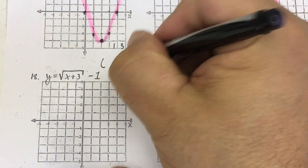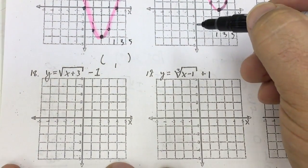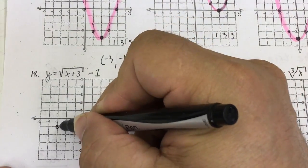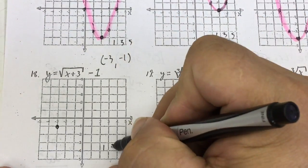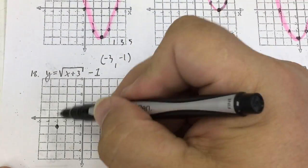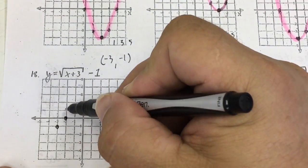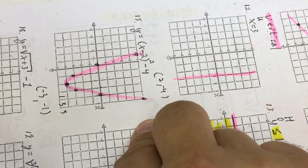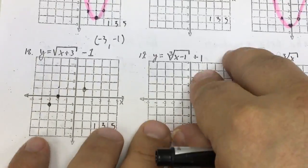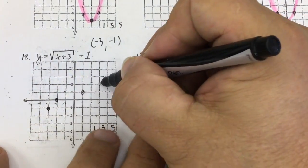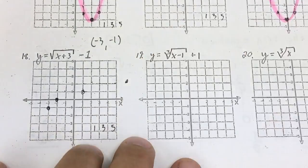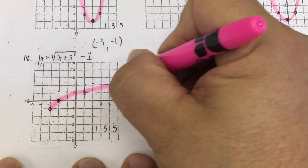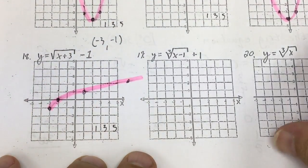Square root function. It's not going to have a vertex — it's going to have what we call a starting point. Opposite same gives a starting point at (negative 3, negative 1). I also use the 1, 3, 5 pattern on this one: up 1 over 1, up 1 over 3. This one goes sideways. I go up 5 over 1, noticing it takes me off the screen. I connect my dots — I just have a starting point, don't go below that.